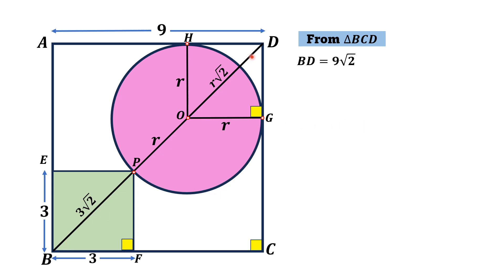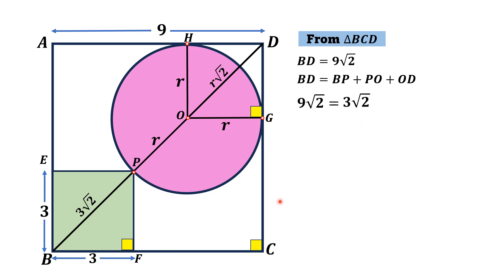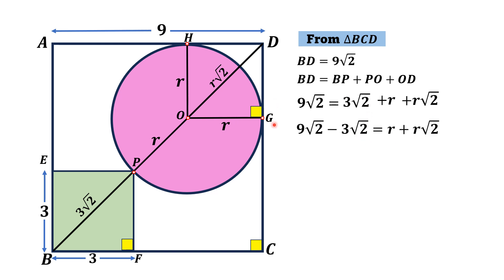Another way to calculate BD is as the sum of three lengths: BP, PO, and OD. So we have BD = 3√2 + r + r√2, and substituting: 9√2 = 3√2 + r + r√2. Taking 3√2 to the left side gives 9√2 − 3√2 = r + r√2.